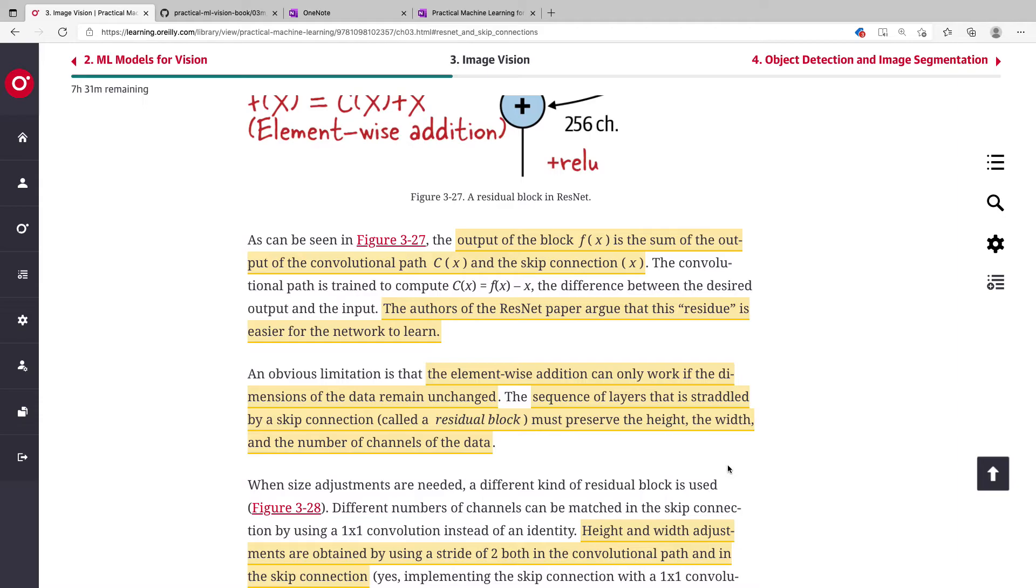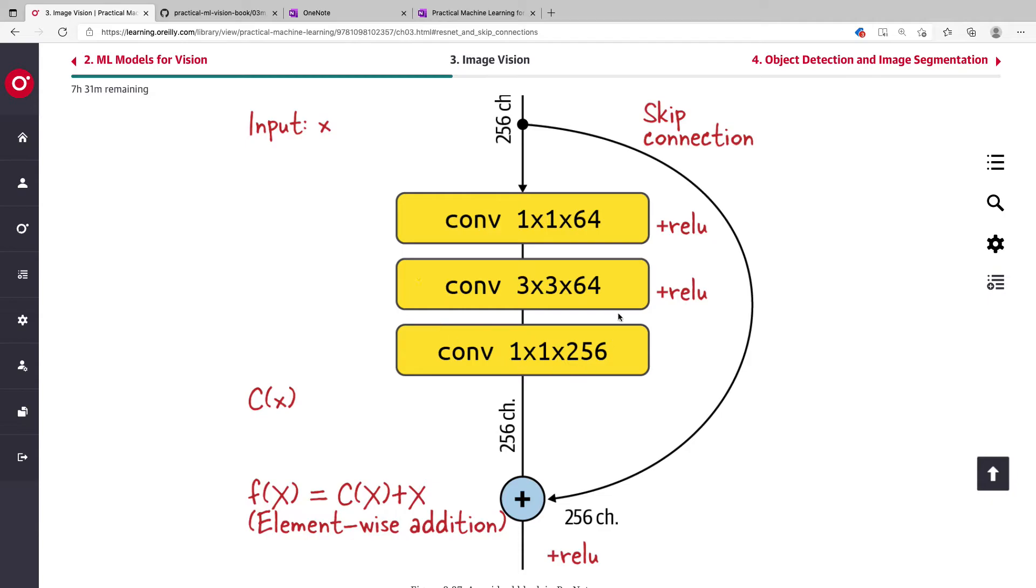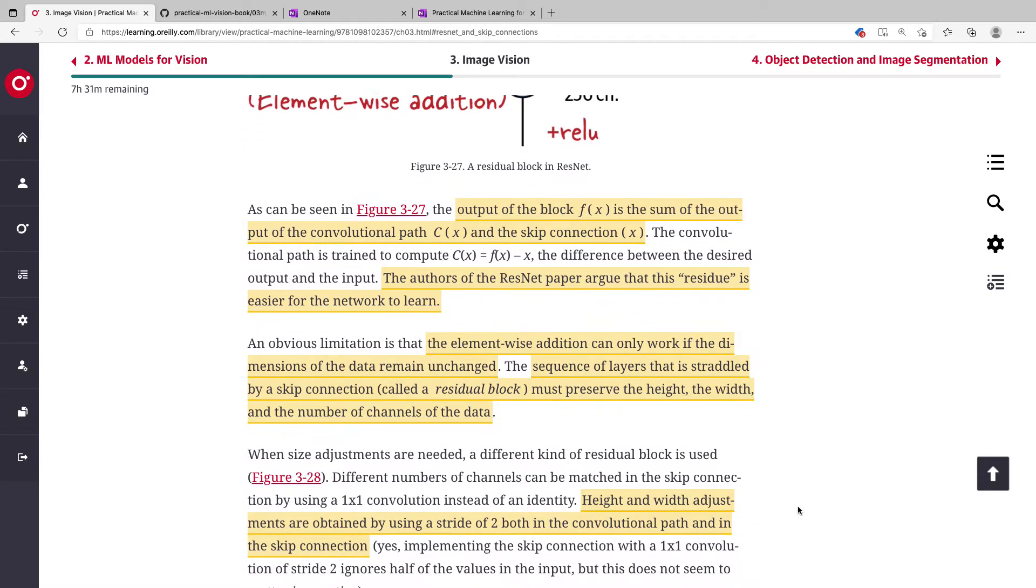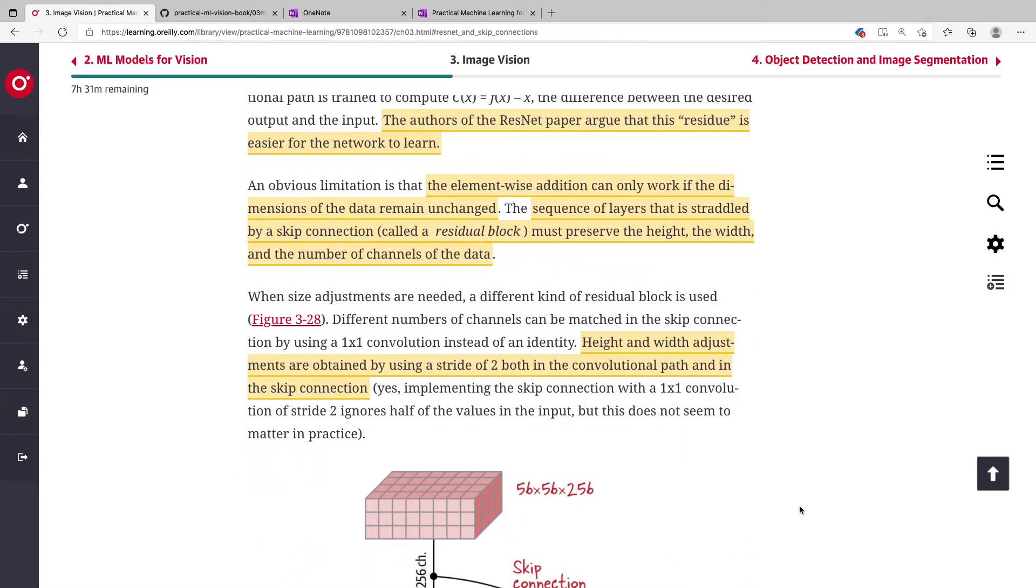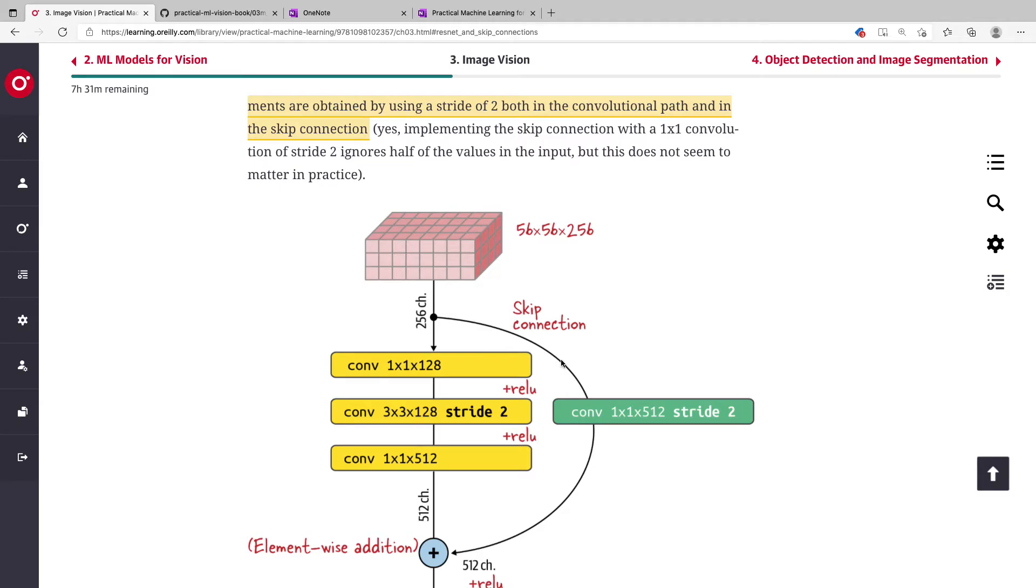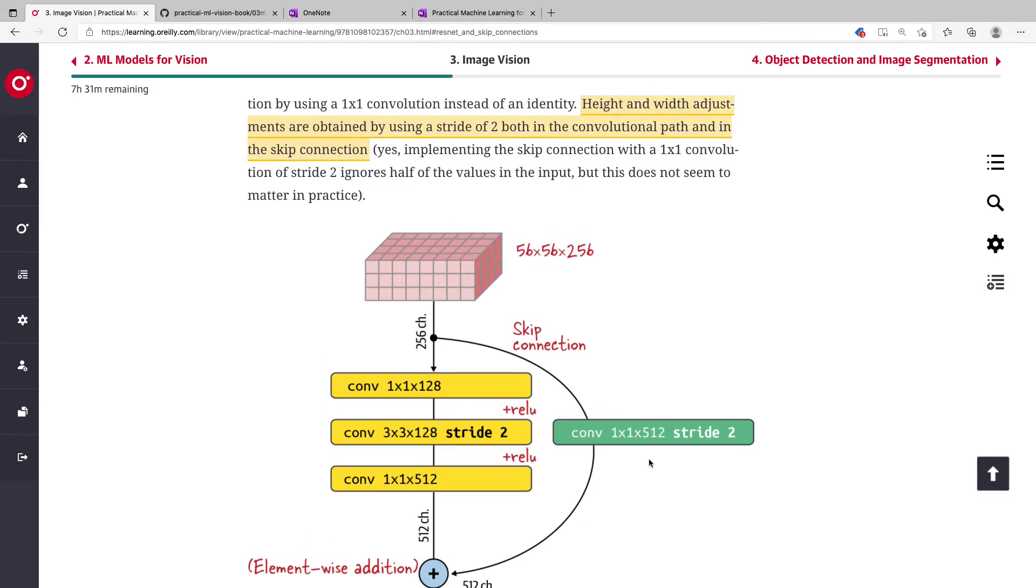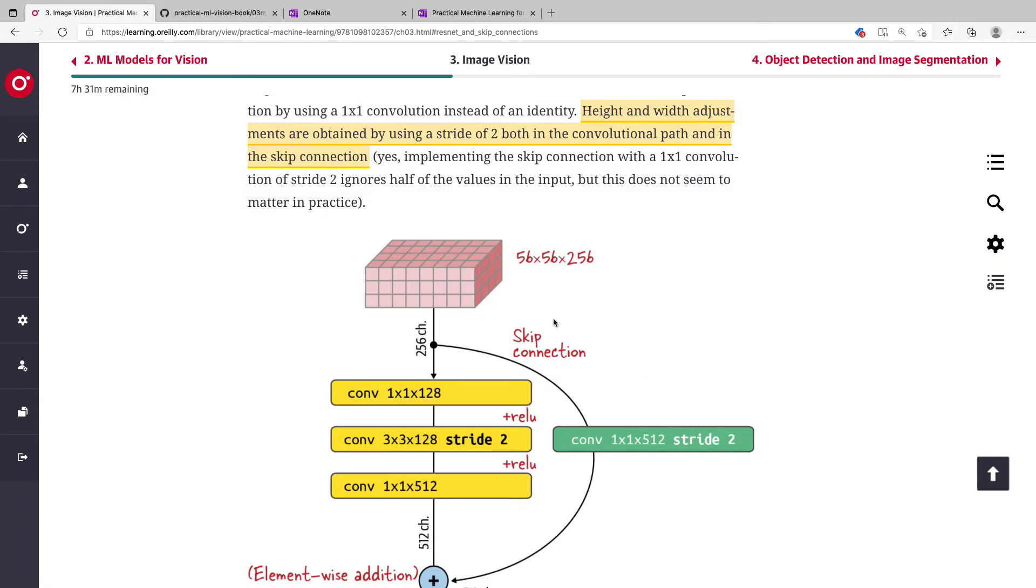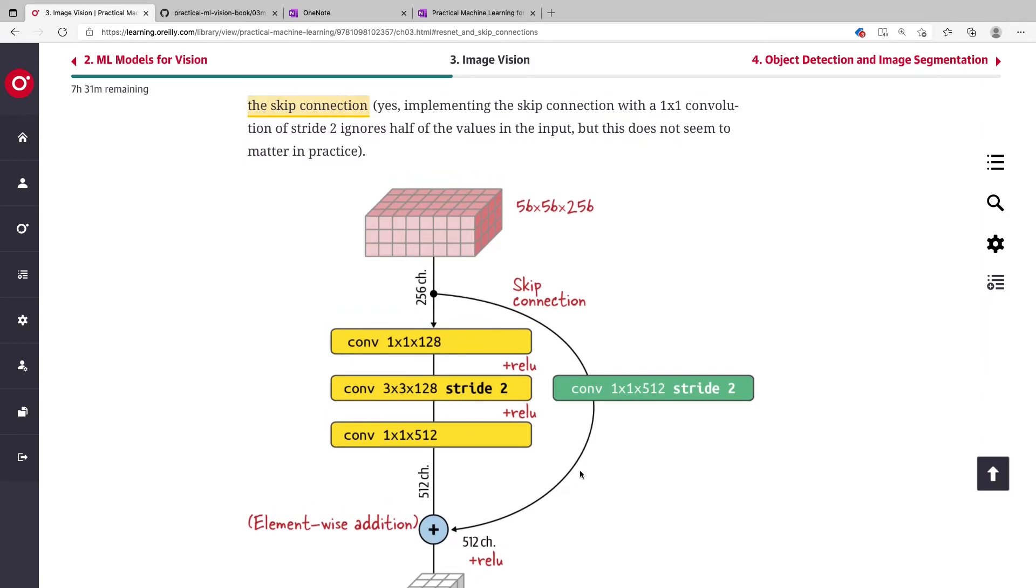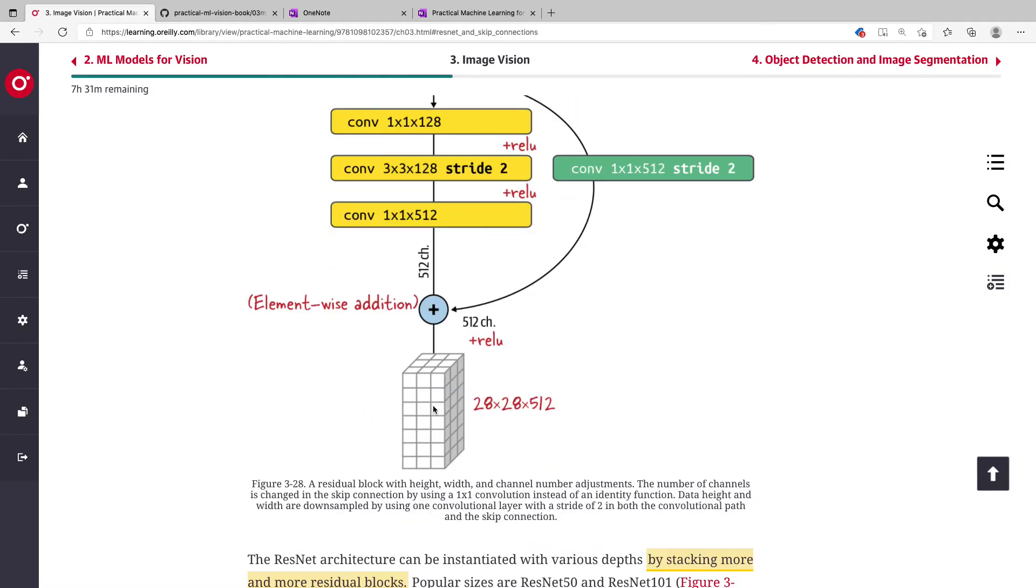The sequence of layers that is structured by a skip connection is called a residual block. This must preserve the height, width, and number of channels. But in case that changes, all you can do is use a 1x1 convolution in this skip connection with a stride to reduce the width and height to the desired dimensions of the residual block.